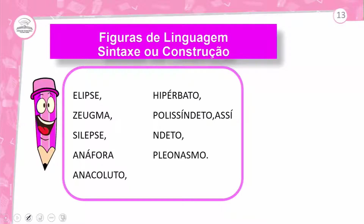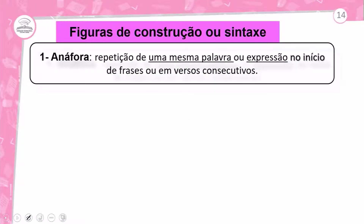Quais são as figuras de construção ou de sintaxe? Temos a elipse, zeugma, silépse, anáfora, anacoluto, hipérbato, polissíndeto, assíndeto e pleonasmo. Tenha calma, vamos ver um a um. Se estiver preparado, tome nota. Se não, fique tranquilo e vamos prestar atenção na explicação e nos exemplos, tentando visualizar se na sua realidade você já utilizou figuras de linguagem de construção ou sintaxe. Primeira figura de construção: anáfora.